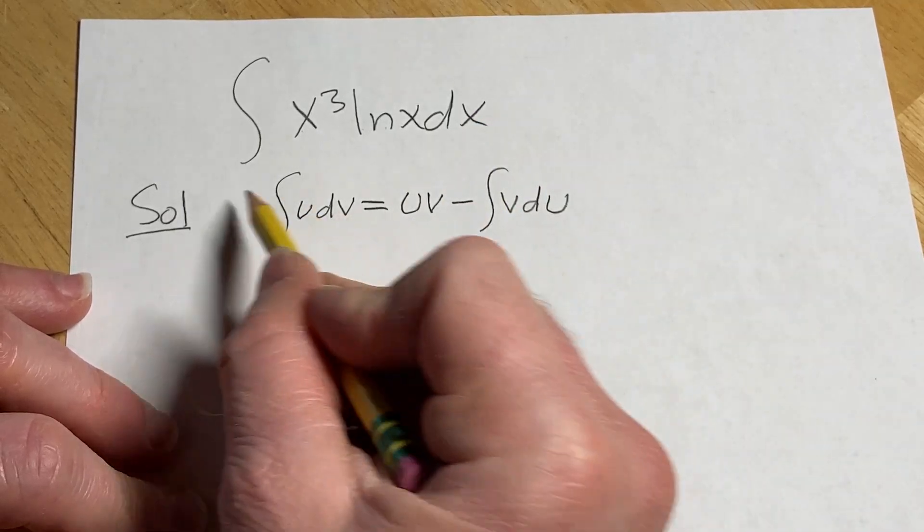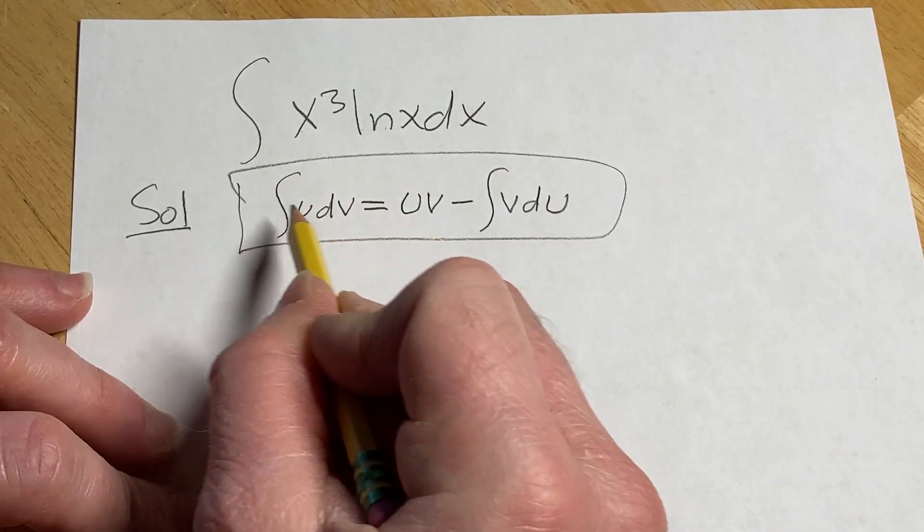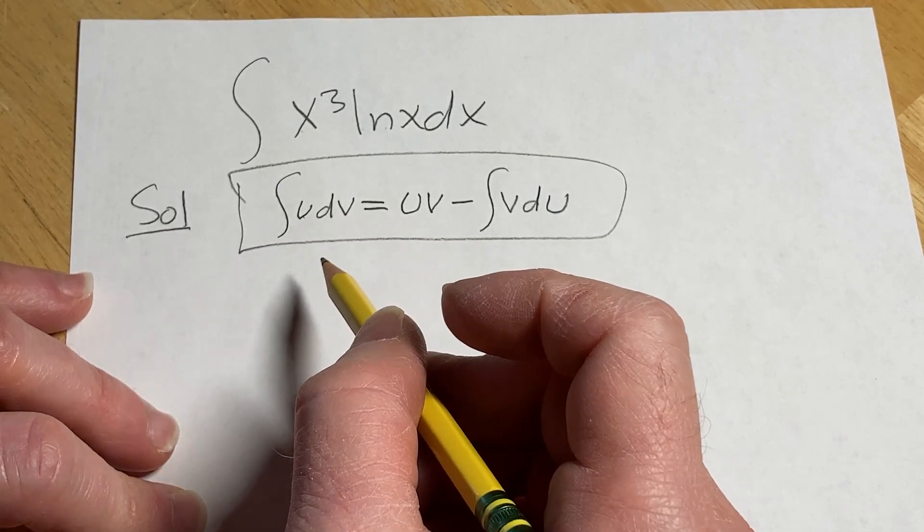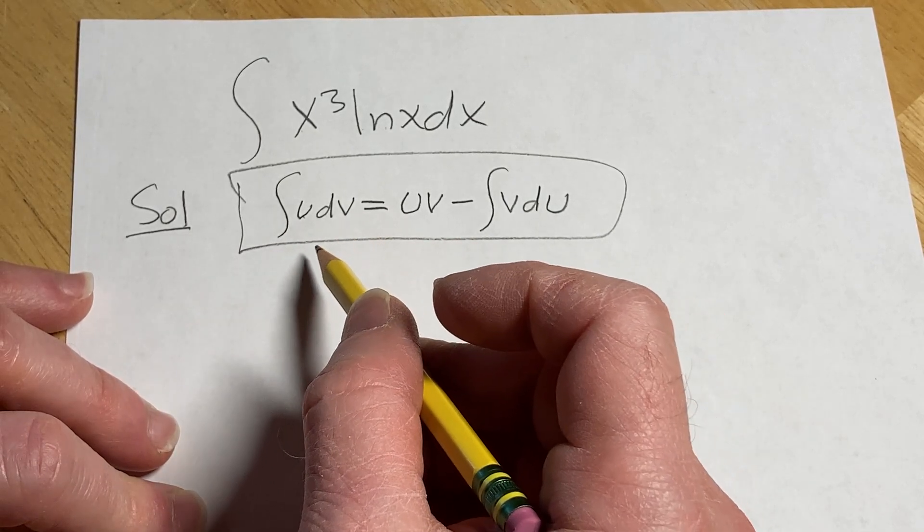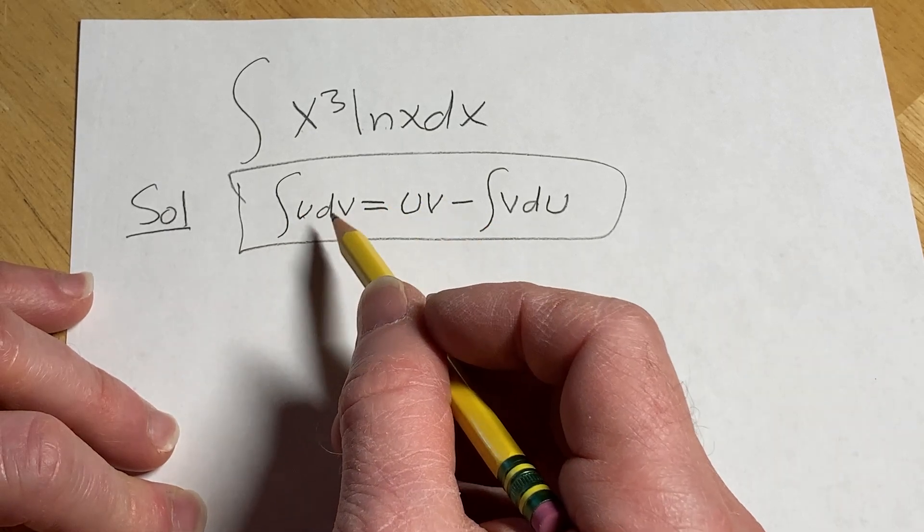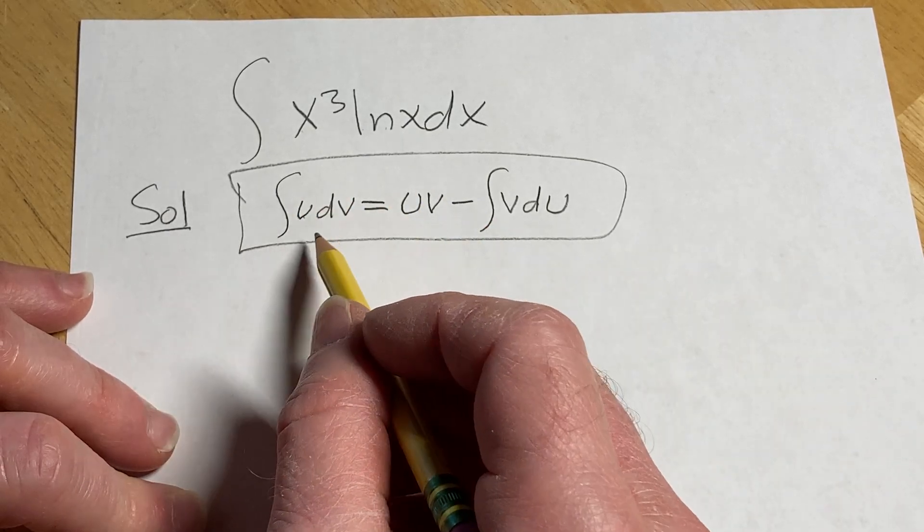And to use the integration by parts formula we have to pick u and dv. When you pick u you want it to have a derivative that is simpler than u, and dv is typically the most complicated part that you can integrate.